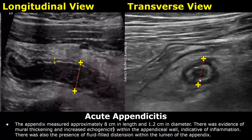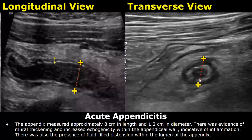You can write the size of the appendix — the length if possible, and then the diameter. Here it is 1.2 cm. You can also write about mural thickening and increased echogenicity within the appendiceal wall, indicative of inflammation. There was also the presence of fluid-filled distension within the lumen of the appendix.